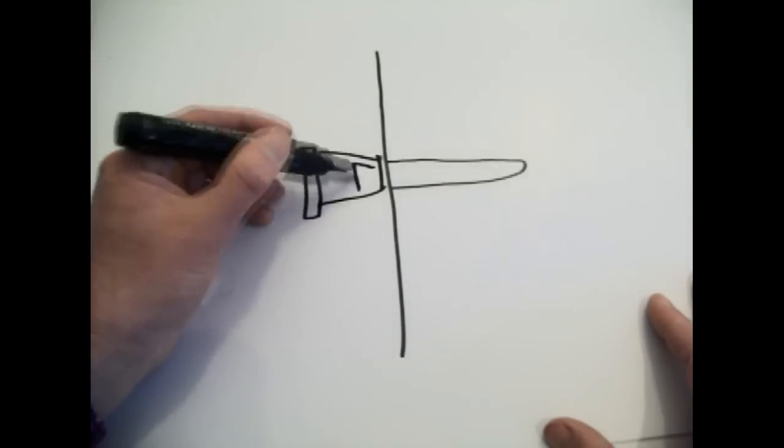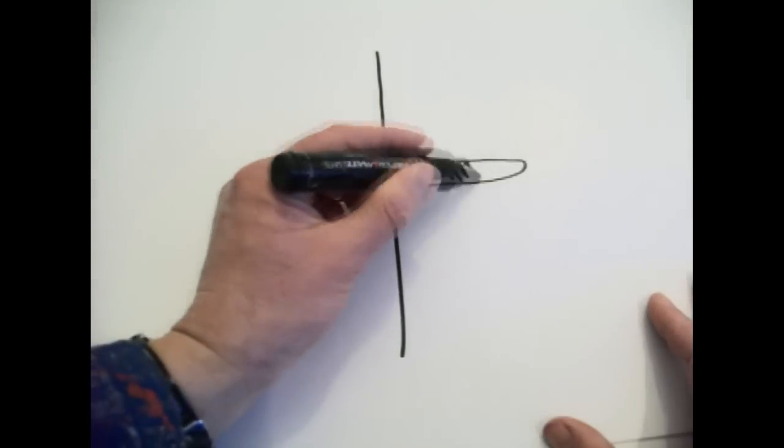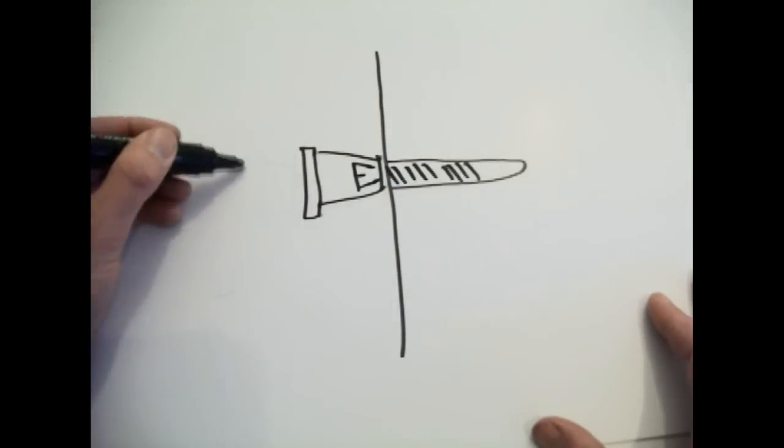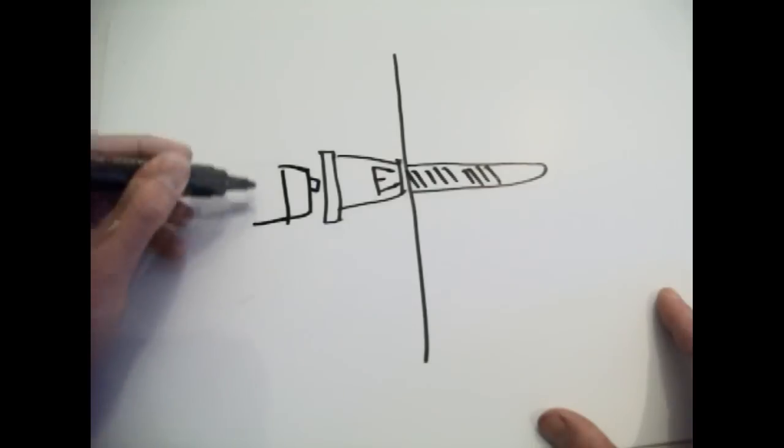The screw goes into the wall and then you have the other part, the male part of the fixing, which is glued to the back of the letter.